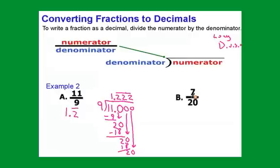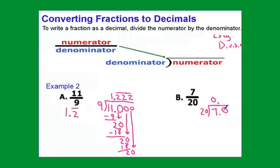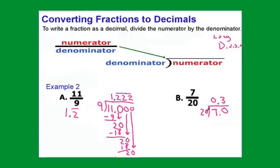For my next example, 7-20ths. Here we're going to put 7 inside the house, or whatever you want to call it, and 20 outside. And then we're going to divide. 20 doesn't go into 7. So I'm going to have to add 0.0. Notice how I put the decimal directly above before I start dividing, because then I won't forget it. Now I'm going to see how many times 20 goes into 70. It goes in 3 times. 3 times 20 is 60, which gives me 10 for a remainder, bring down the 0. And 20 goes into 100 5 times. And notice we have a remainder of 0, so we're done. It's 0.35. This is what we call a terminating decimal.